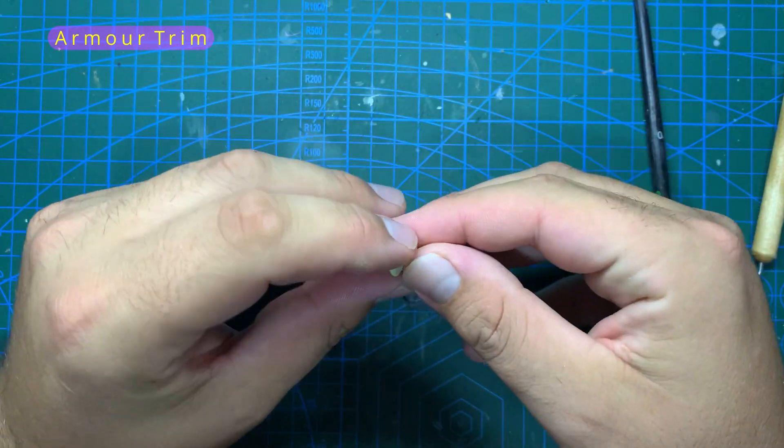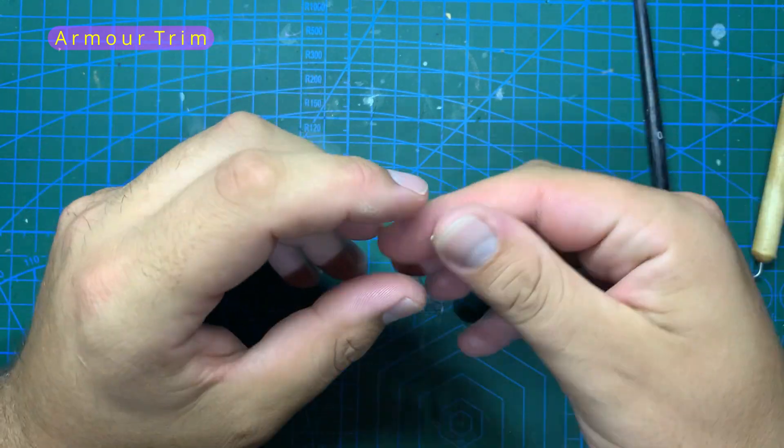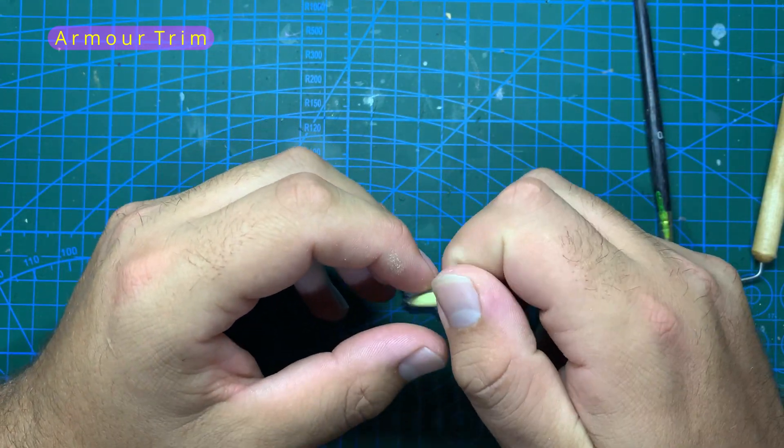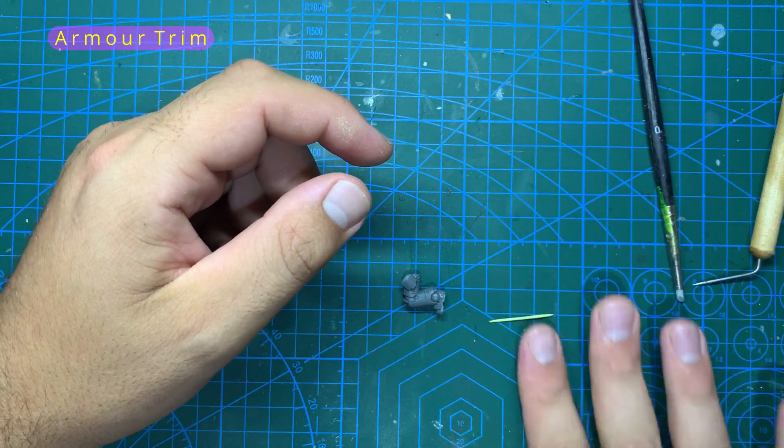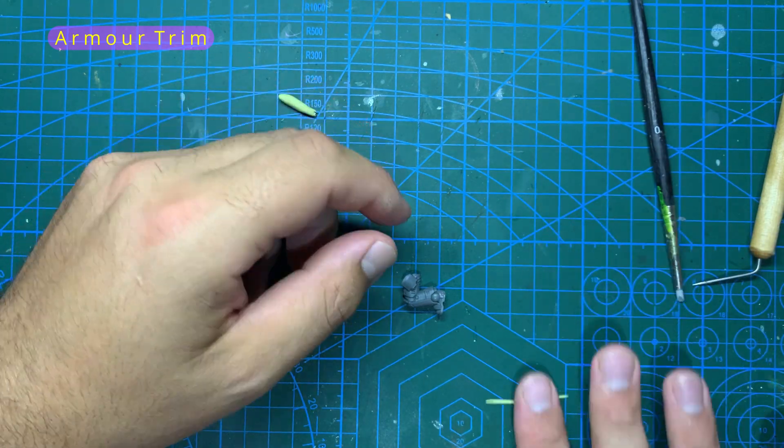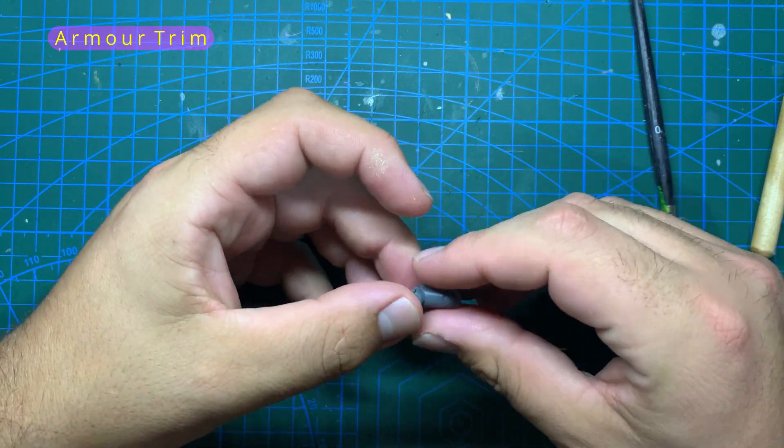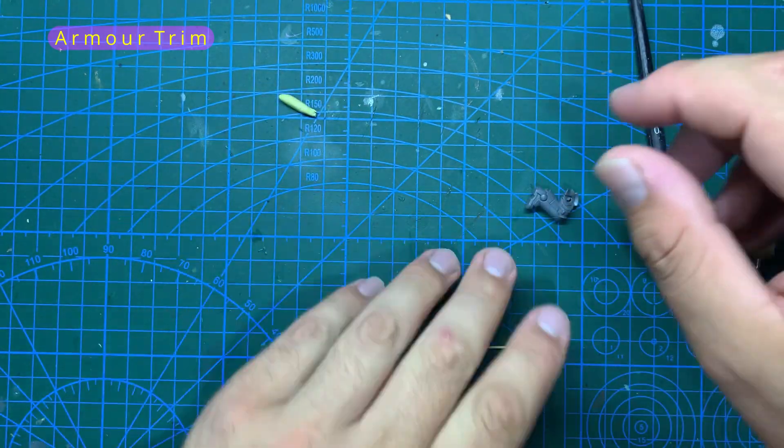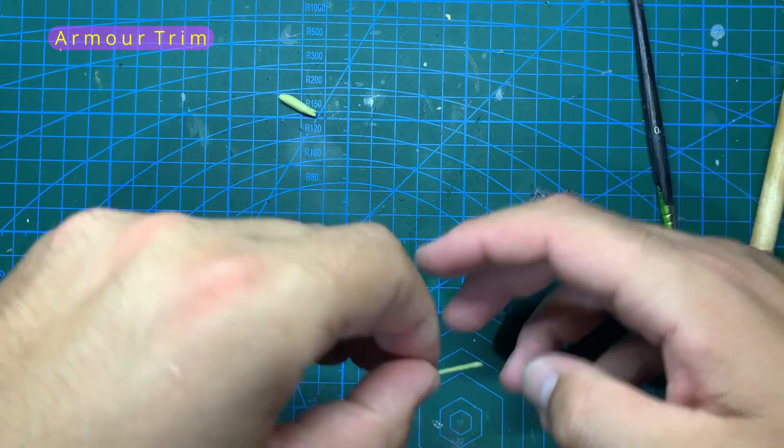To begin with I'm going to be adding some trim on some of the armor plates of the legs of this Assault Intercessor. I'm doing it in pieces because it'll be a lot easier than trying to do it when it's all stuck together. The followers of Chaos have a habit of adding some rather nice looking trims to their gear, usually accompanied by spikes.